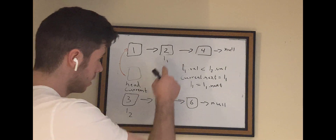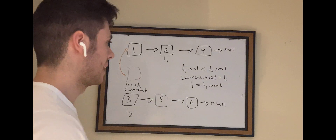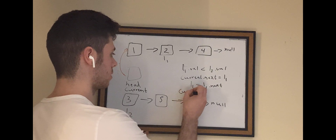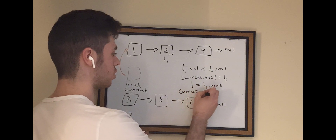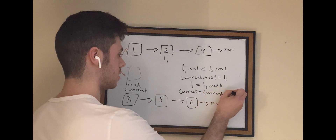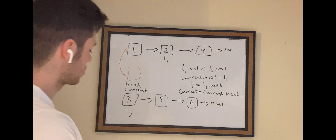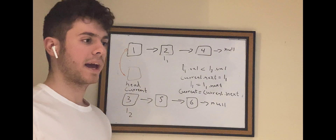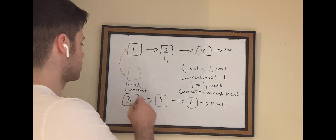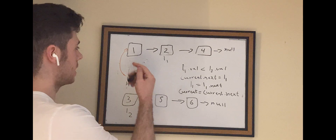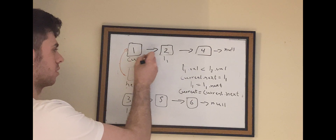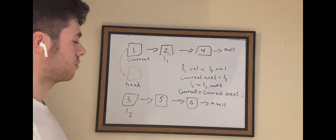We also need to do one last thing, which is set current to be equal to current.next. Since current is here, we want to keep track of where we are in our new merged linked list, so we move current forward. The current pointer is now updated. So we've done the first iteration.